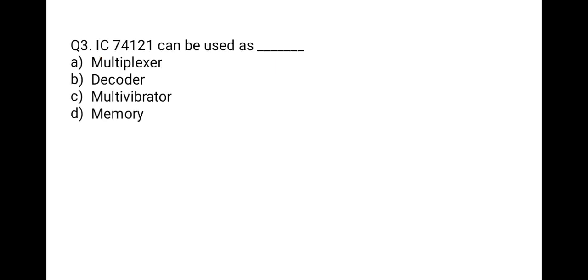The next question: IC 74121 can be used as which of the following? Options: multiplexer, decoder, multivibrator, or memory. We know that IC 74121 is called a monostable multivibrator, also called a pulse generator. So the correct option is C, multivibrator.